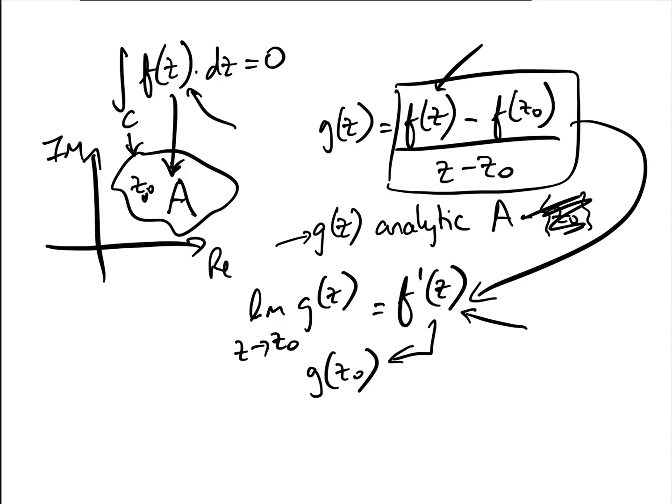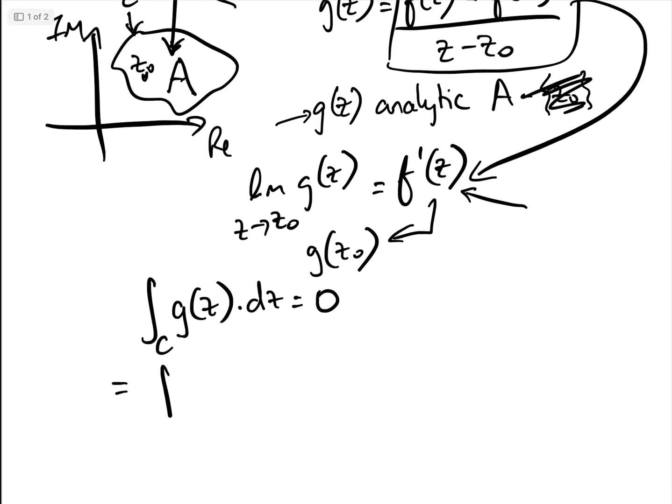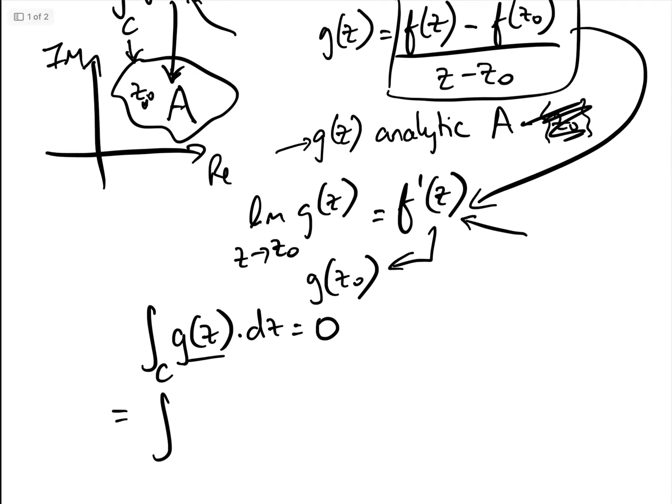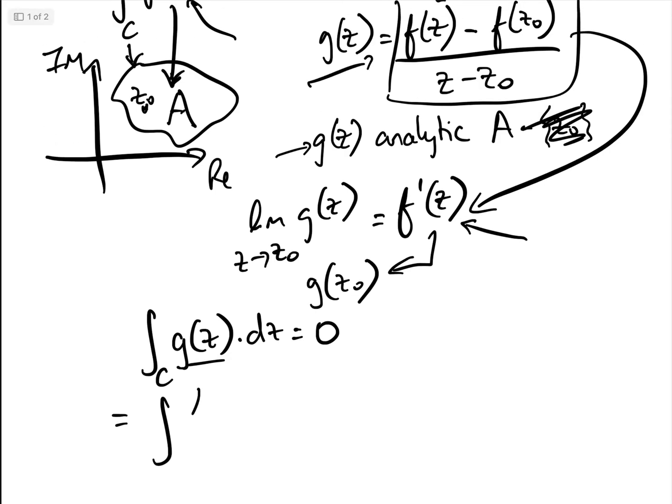Hence, we can say, we can use Cauchy's integral theorem to say, well, that means that the integral around the curve of g of z dz equals 0, because g of z, we've just established by the way that we've defined it, is analytic within the region A. So basically, what does that mean? That means, therefore, well, as g of z is equal to f of z minus f of z0, that means that the integral of f of z minus f of z0 over z minus z0 dz around the curve of z also equals 0.